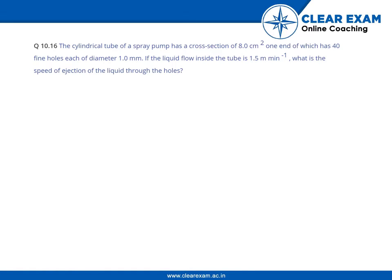Welcome back. Let us go to the question. The cylindrical tube of a spray pump has a cross-section of 8 cm², one end of which has 40 fine holes, each of diameter 1 mm. If the liquid flow inside the tube is 1.5 meter per minute, what is the speed of ejection of the liquid through the holes?